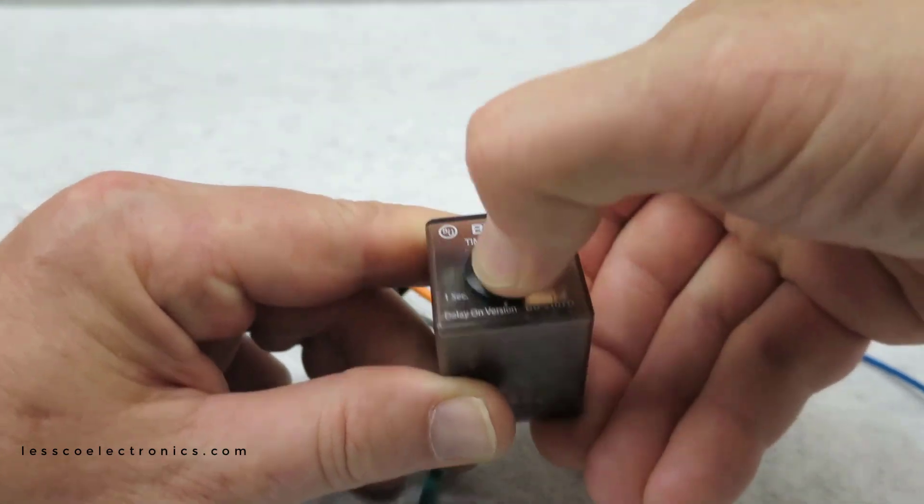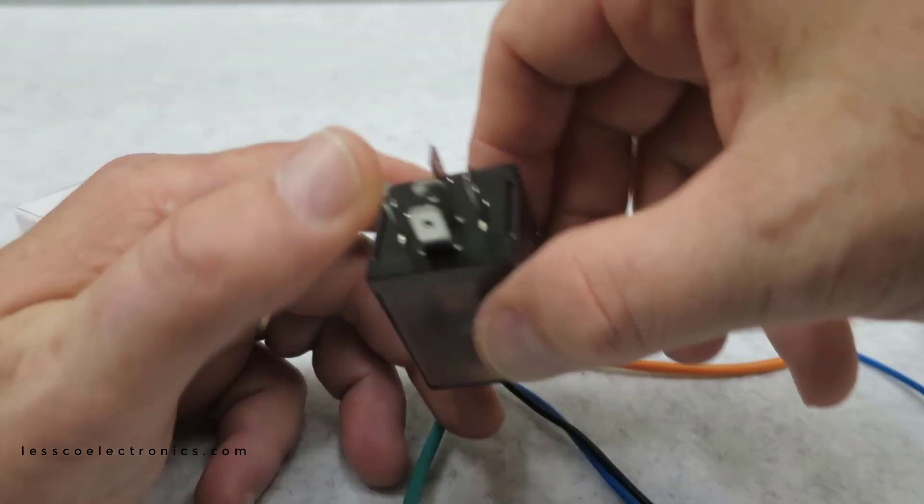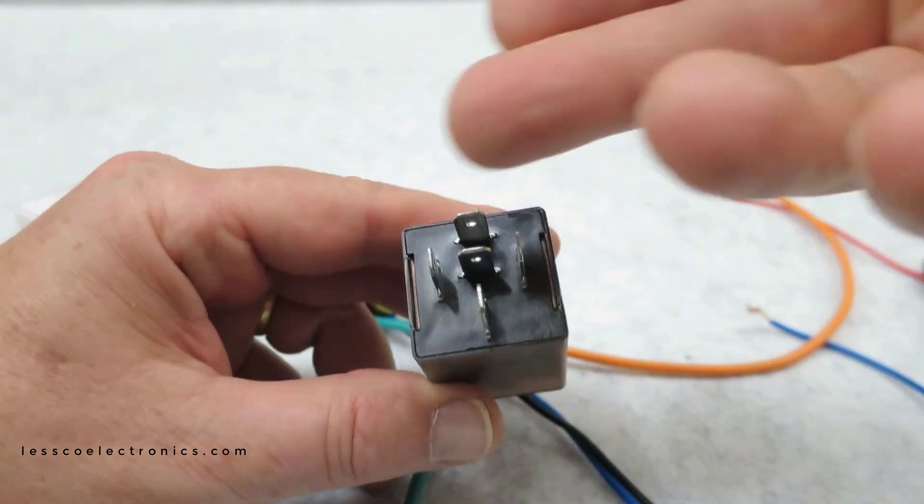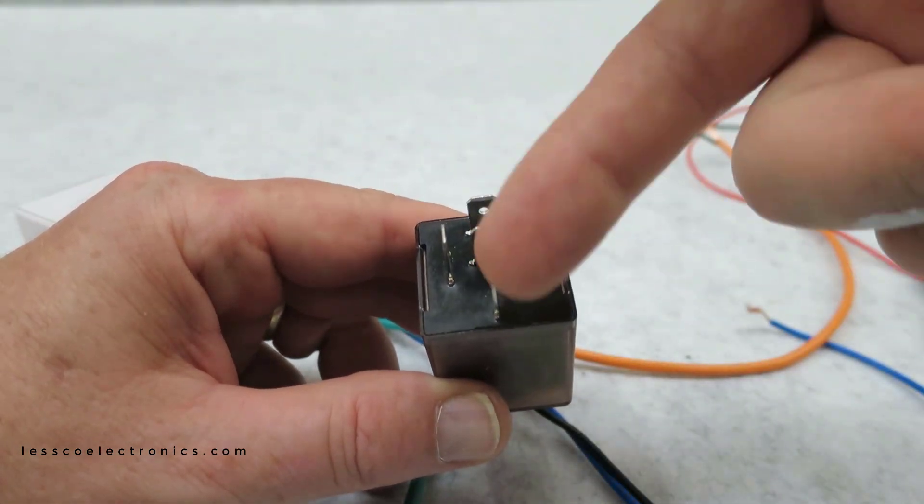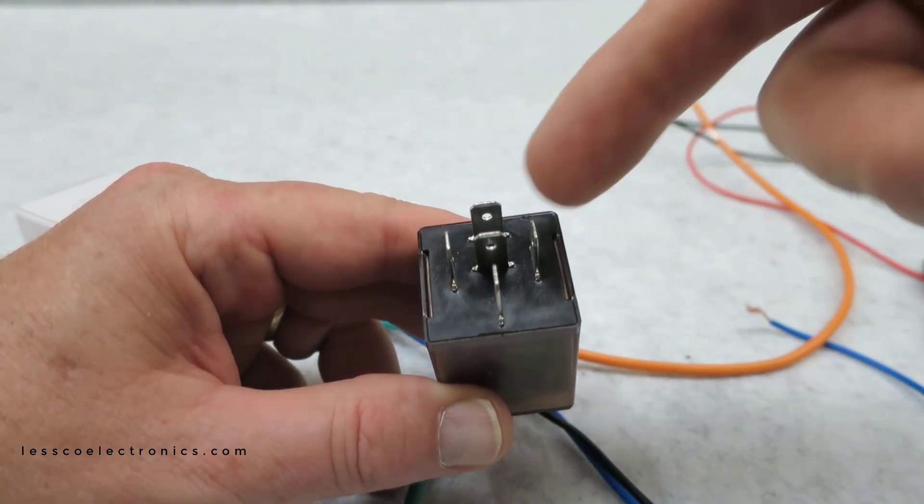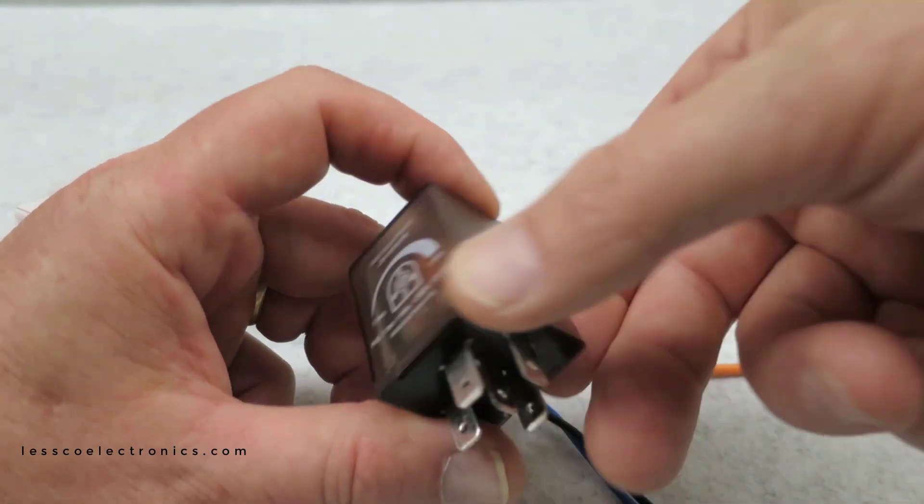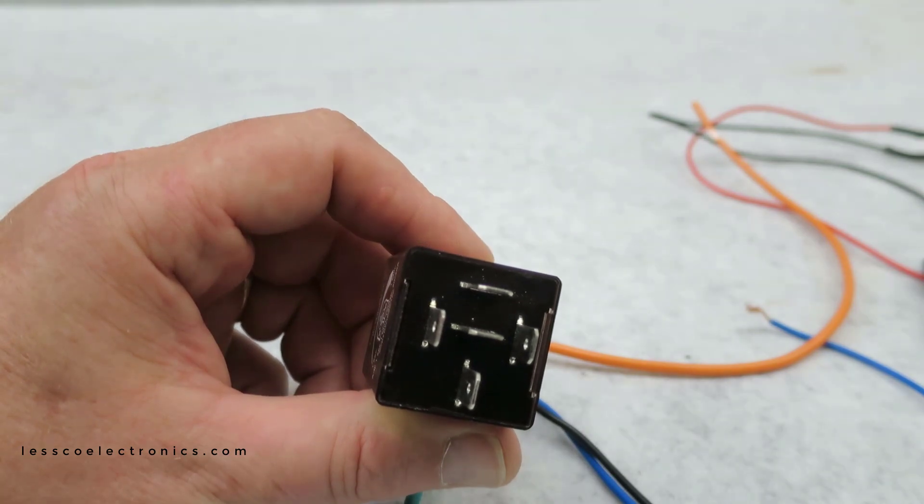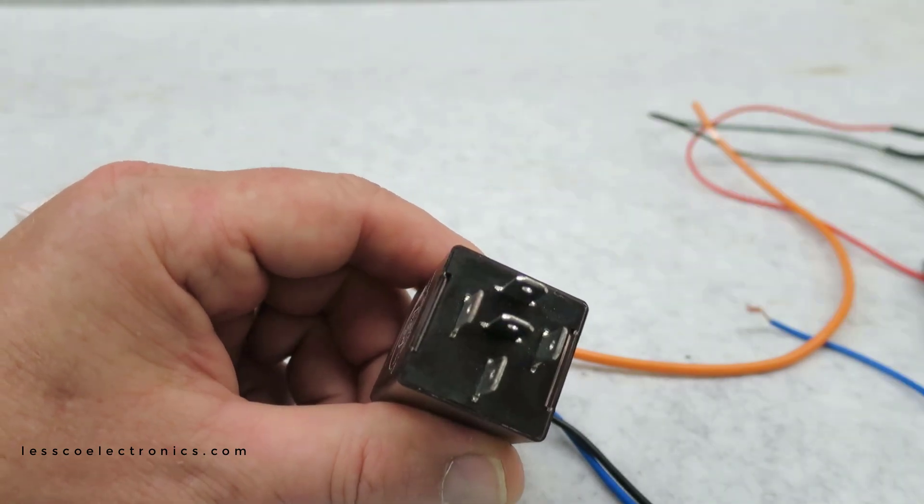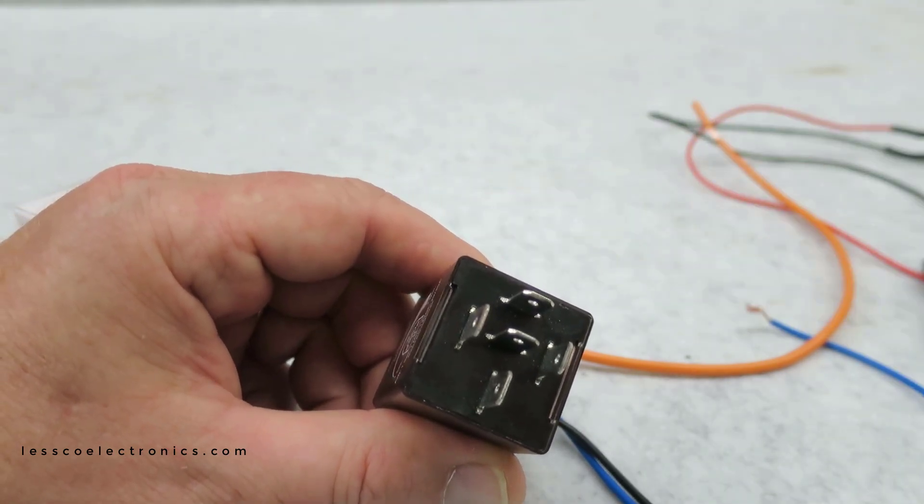And instead of having that big bulky 528T, you can take this and over here you have a single pole double throw output. You have your common, you have your normally closed, normally open, coil for your relay, very straightforward. And whatever you put on the positive trigger on the coil side is going to output on the output side of the relay, very simple, straightforward. Just about anybody can understand that.